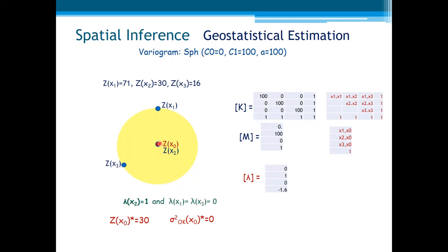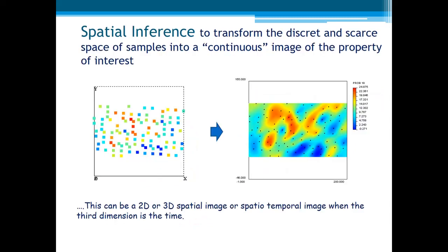Kriging honors the sample location. The common practice of Kriging in any application field — like mining, geology, soil, water — usually consists of estimating a regular grid of points covering all the sample locations, meaning the entire space. In this way, we transform the scarce and discrete sample space into a more continuous image of the property we wish to estimate.